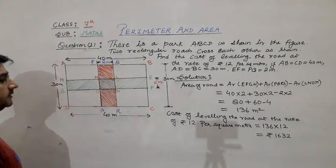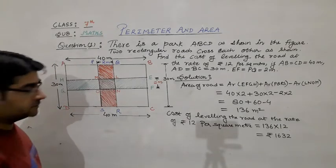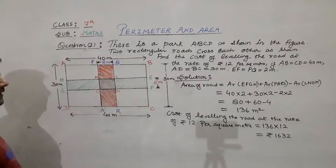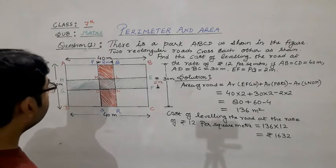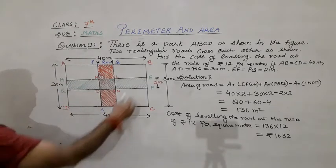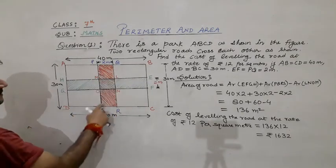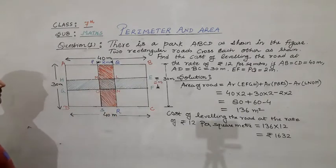Now we have to calculate the area of both the roads, that is PQRS and EFGH. I have shaded EFGH with green color and PQRS with red color.